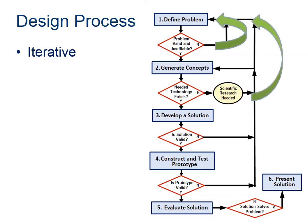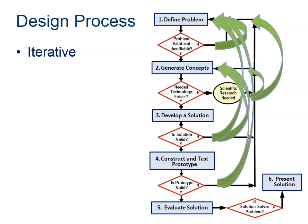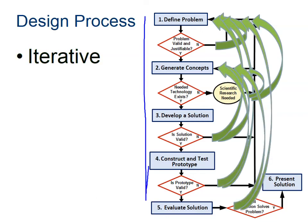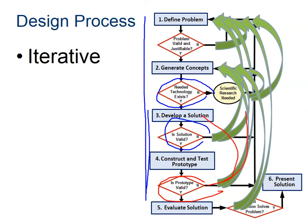One thing that's really important about this process: if you look at it, it looks linear — straight up and down. When in fact, if I find that the answer is no to any of these questions, I can go back. For example, if I find after I construct and test my prototype that it is not valid, I can go back to step three, or step two, or step one — wherever makes sense. That's totally up to you.